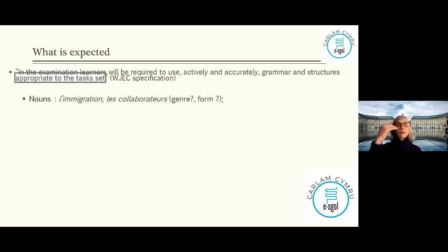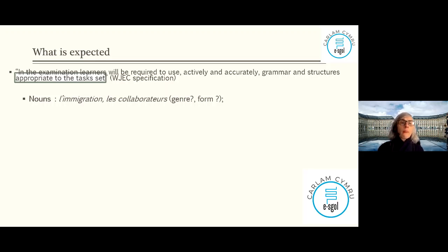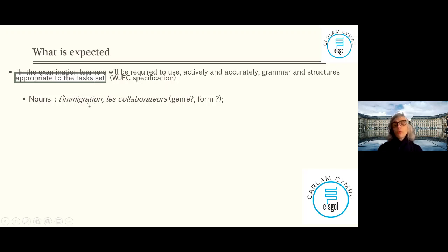They want you to know how to use nouns linked with your topics. You need to know their gender. For example: what is the gender of 'immigration' and 'collaborateur', and are they singular or plural? 'Immigration' is feminine because most French words ending in -ION are feminine. So if you have to write or speak about it, you have to agree every adjective — you'd say 'importante' with an E at the end.